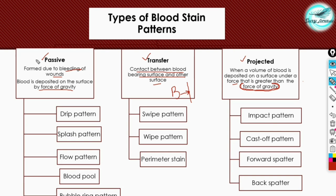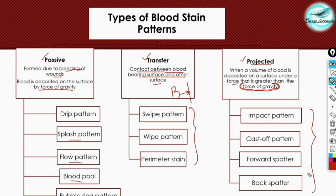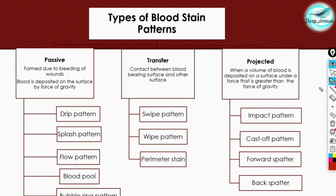Passive blood stain patterns are further divided into five types: the drip pattern, splash pattern, flow pattern, blood pool, and bubble ring pattern. Transfer patterns are further divided into three types: the swipe pattern, the wipe pattern, and the perimeter stain. Projected blood stain patterns are divided into four types: the impact pattern, cast-off pattern, forward spatter pattern, and back spatter pattern.